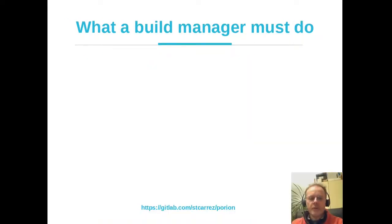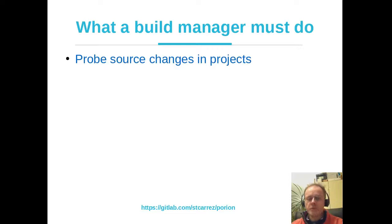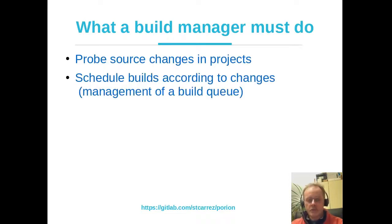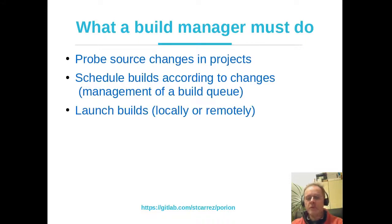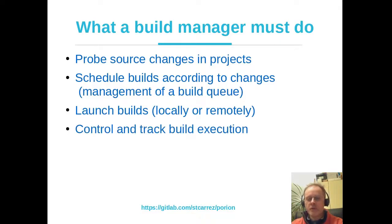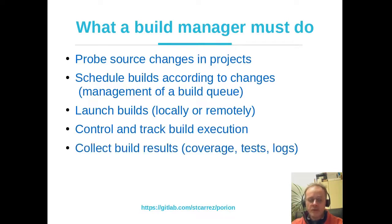What must a build manager do? Again, a lot of things. First, it must probe the source repository for changes to trigger builds. Then it must schedule builds when changes are detected — it has a build queue. From the build queue, it must launch a build and execute the build steps described in the recipe, either locally or remotely. While executing, it must control and track the execution, collect build results with logs, build metrics, code coverage, and unit test execution.